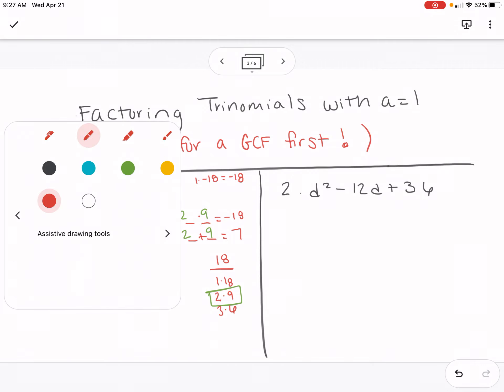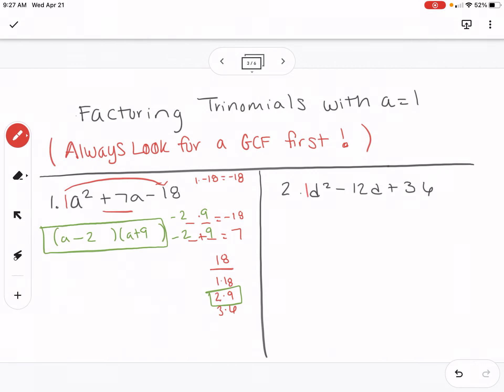On question two, I'm going to multiply the 1 times the 36. That's just 36. And now I'll set up my blanks. My middle number always goes on that bottom blank. So we can make a list of numbers that multiplies to give us 36.